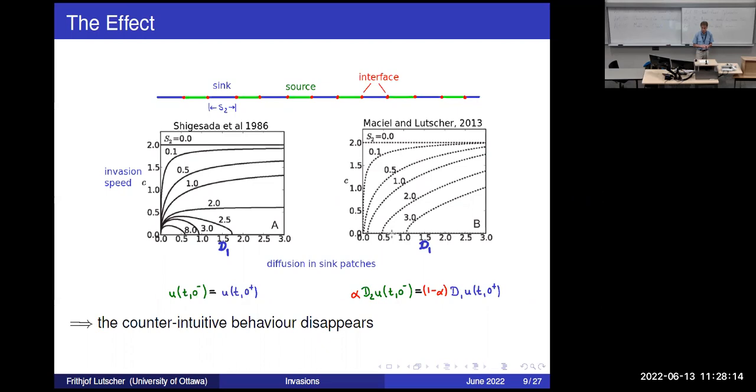With our different matching conditions, we see the pattern we would more expect, namely the faster individuals move through a sink patch, the faster the overall population progresses. If individuals don't move fast enough through a sink patch, then the overall population just stops. This counterintuitive behavior that Shigesada found but didn't really discuss in their paper goes away. Not only that, we can also explain it with our formula down here, because if you make D_1 large and at the same time try to have continuity, then you'd have to have alpha go to one. That means individuals tend to not cross from one into another patch because alpha is the probability of staying in a good patch. So if that goes to one, individuals just don't go beyond the patch where they are and obviously then the population cannot spread.